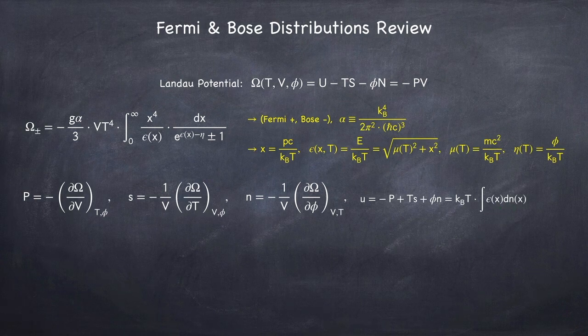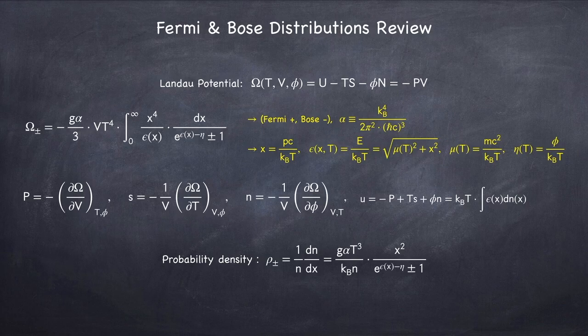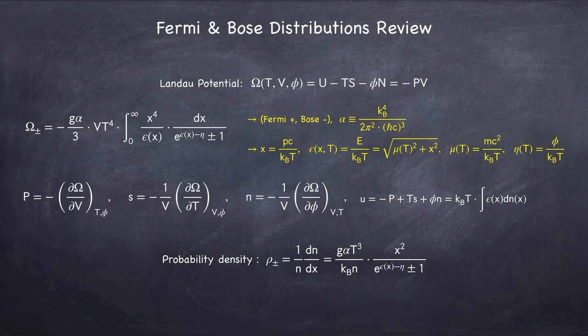From this potential we can also get a general probability density. So we can find any quantity from this, as long as we know how it depends on x. Recall that x is basically the same thing as momentum. So if you know how a quantity depends on momentum, you can use the probability density to find its average value.